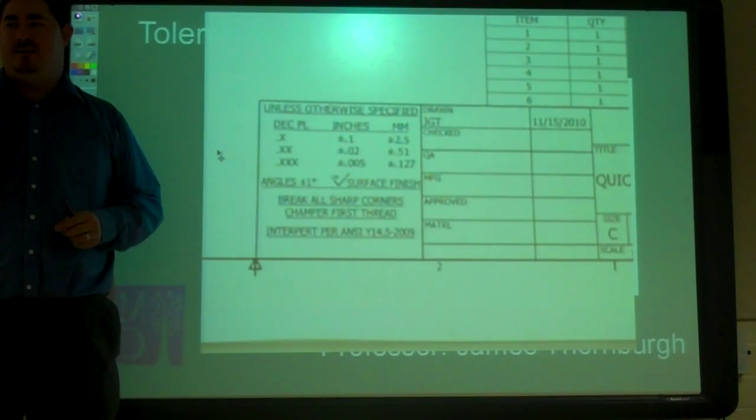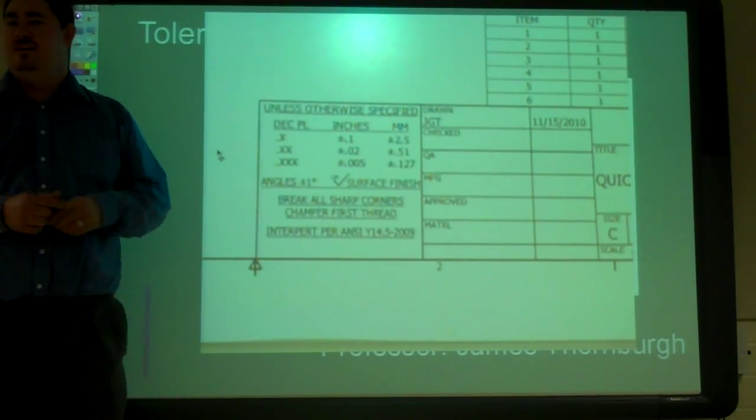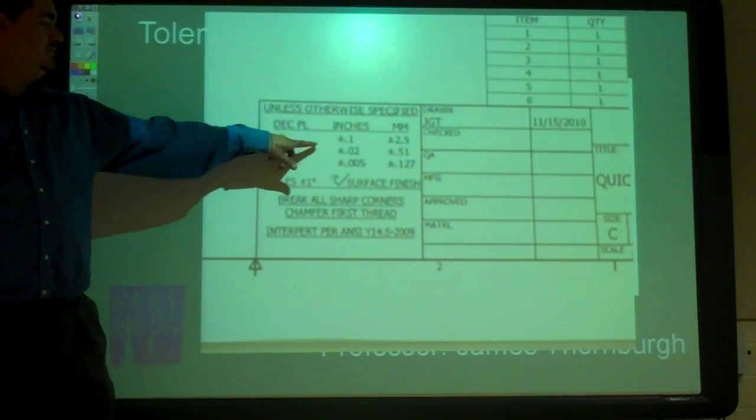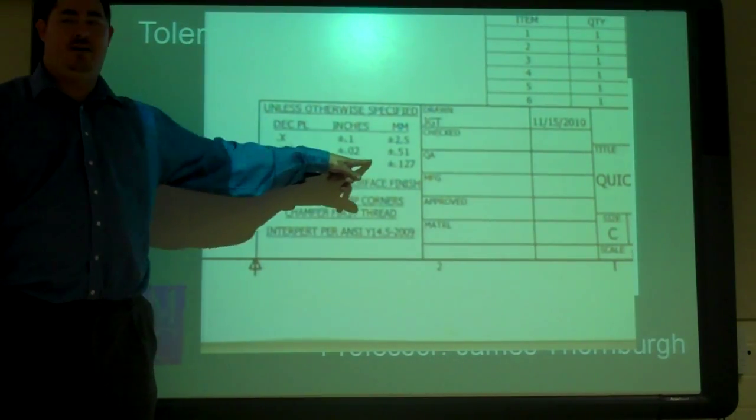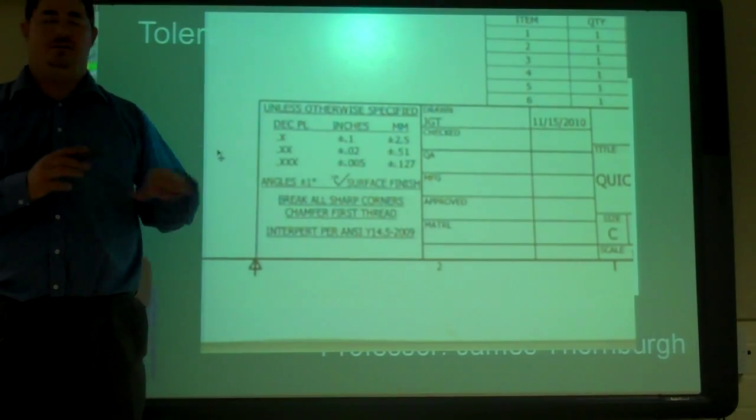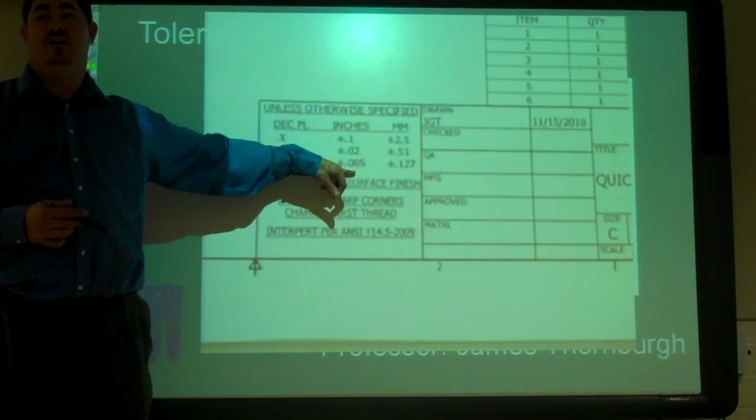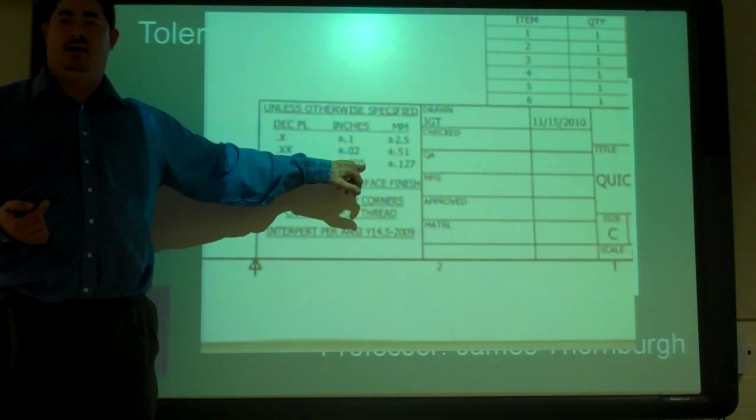And then the tolerance based on the units. Remember I talked about having to buy those zeros at the end? Because if it's one decimal place, it's a tenth. Two decimal places, it's two hundredths. Three decimal places, it's five thousandths. So that's how much they can be. They can either be over or under by that amount.